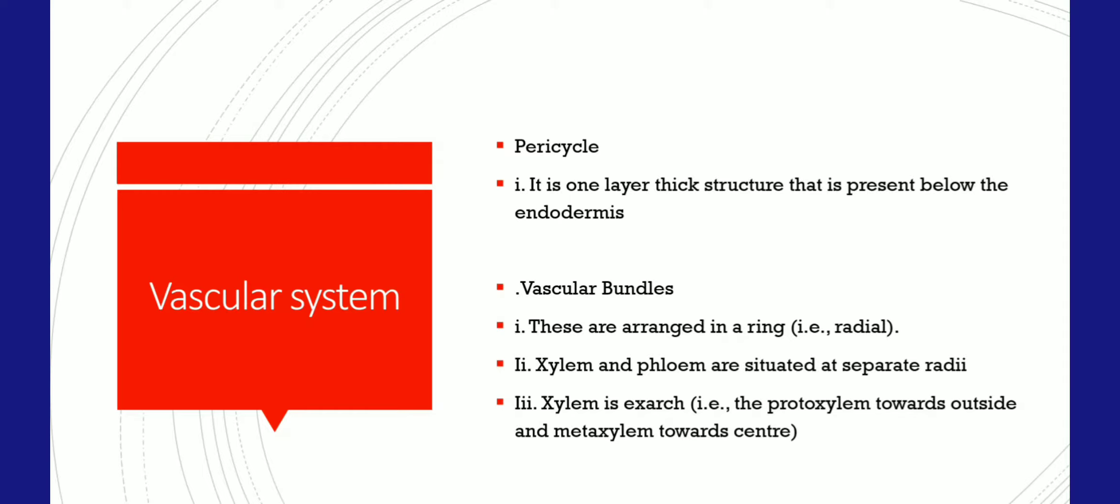Vascular bundles are arranged in a ring, forming a radial vascular system. Xylem and phloem are situated on separate radii. Xylem is exarch, with protoxylem towards the outside and metaxylem towards the center.